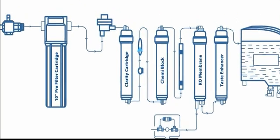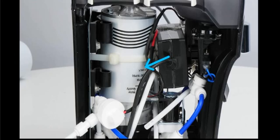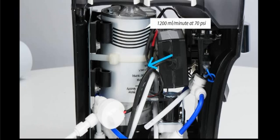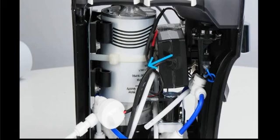This is a booster pump. It is used to provide adequate pressure for efficient membrane functioning. This provides a water flow rate of 1,200 milliliters per minute at 70 psi. It works on a 24-volt DC.